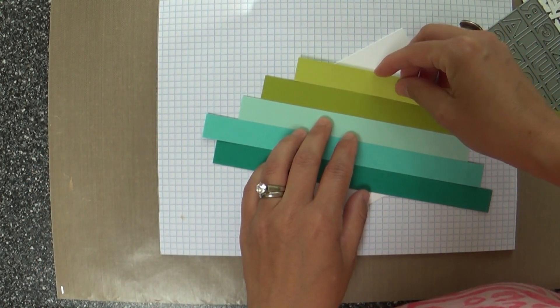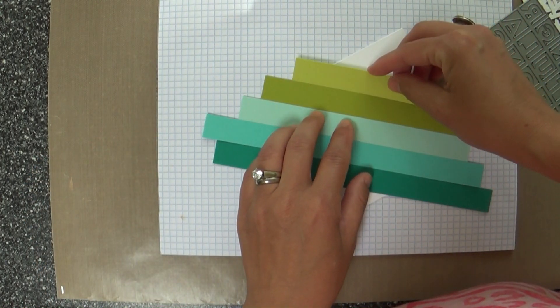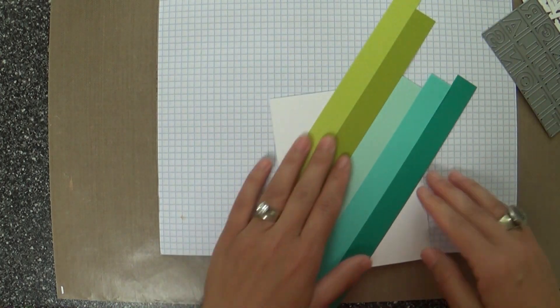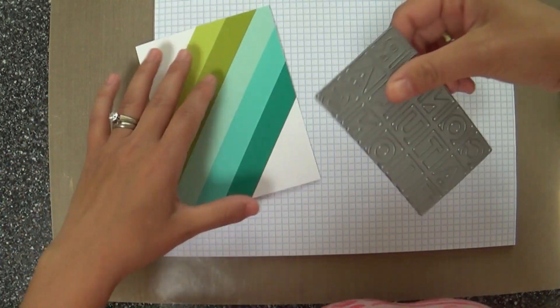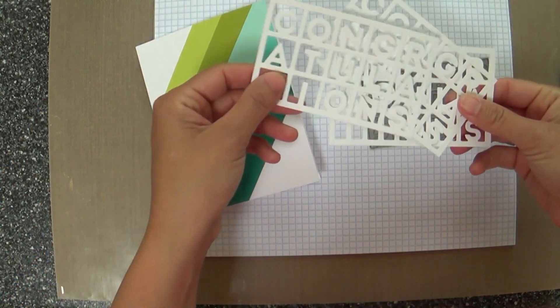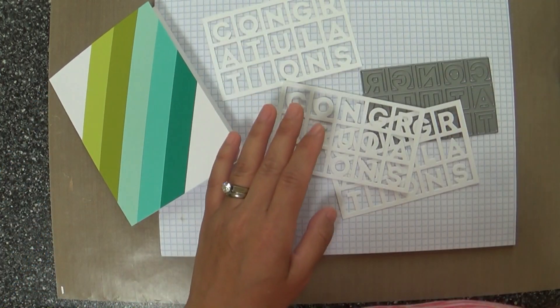So what I did was I started with a standard white card and I had some scraps of cardstock in pretty colors and I just adhered them on diagonally. I cut each of the stripes three-fourths of an inch wide. Now the congratulations, we're moving on.